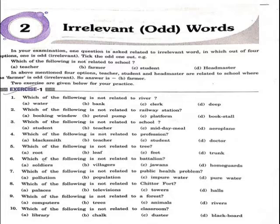Fifth question: which of the following is not related to a tree? Options are root, leaf, feet, trunk. The right option is C — feet.